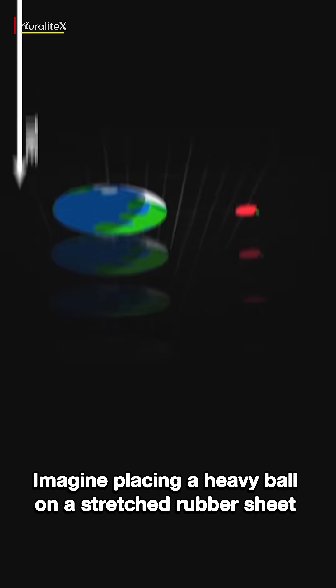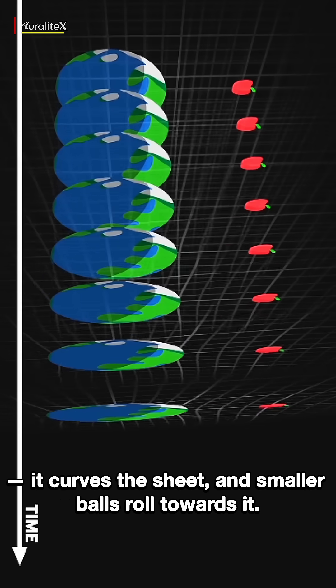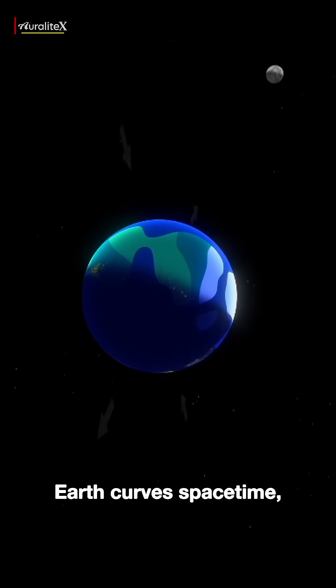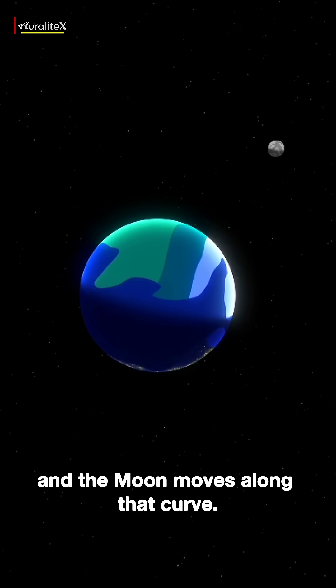Imagine placing a heavy ball on a stretched rubber sheet. It curves the sheet, and smaller balls roll towards it. That's how gravity works. Earth curves spacetime, and the moon moves along that curve.